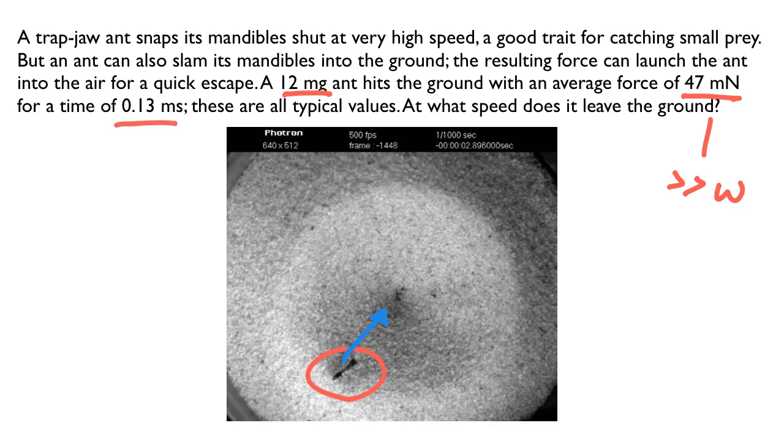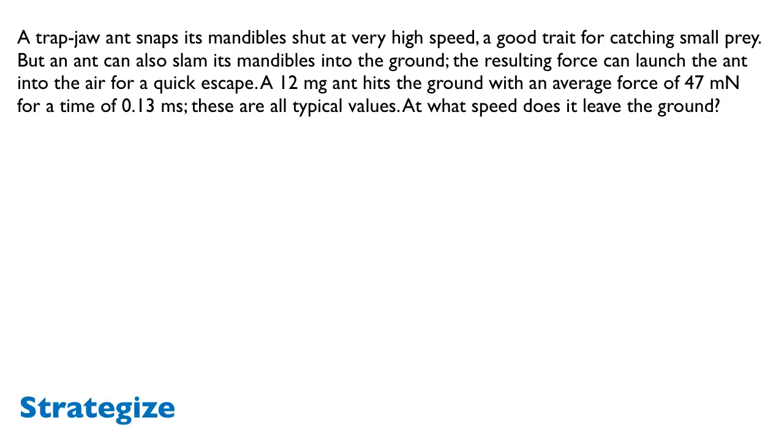Let's look at some values. A 12 milligram ant hits the ground with an average force of 47 millinewtons. Now I'm going to note that that force is much, much greater than the weight of the ant. So that tells us immediately that we are justified to think about this using the momentum formalism. Also the time, 0.13 milliseconds, very short time. As a consequence, we've got large force and short time intervals. That sets us up for our strategize step, which is to say we're going to treat this using impulse.